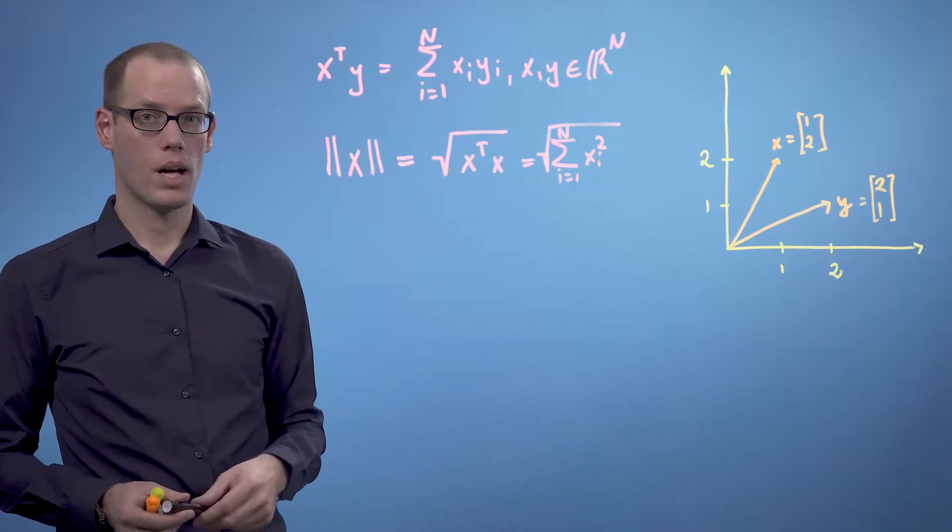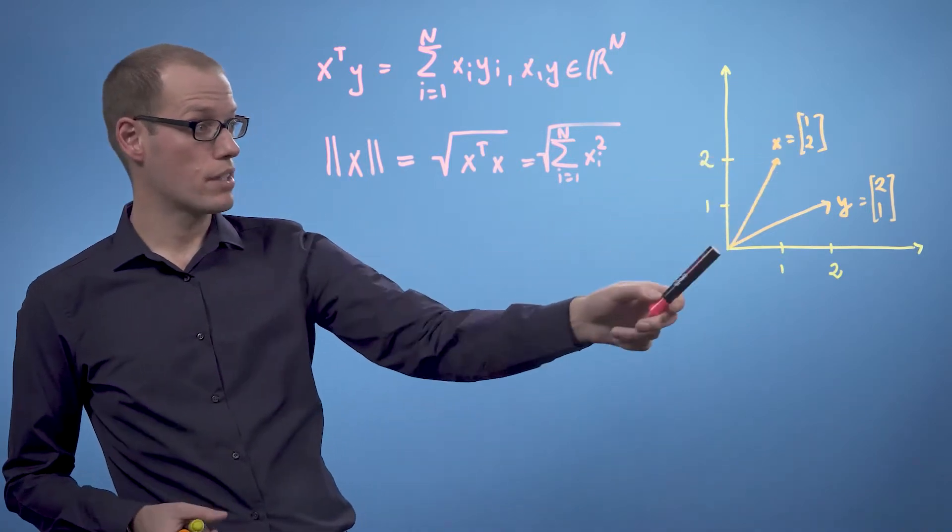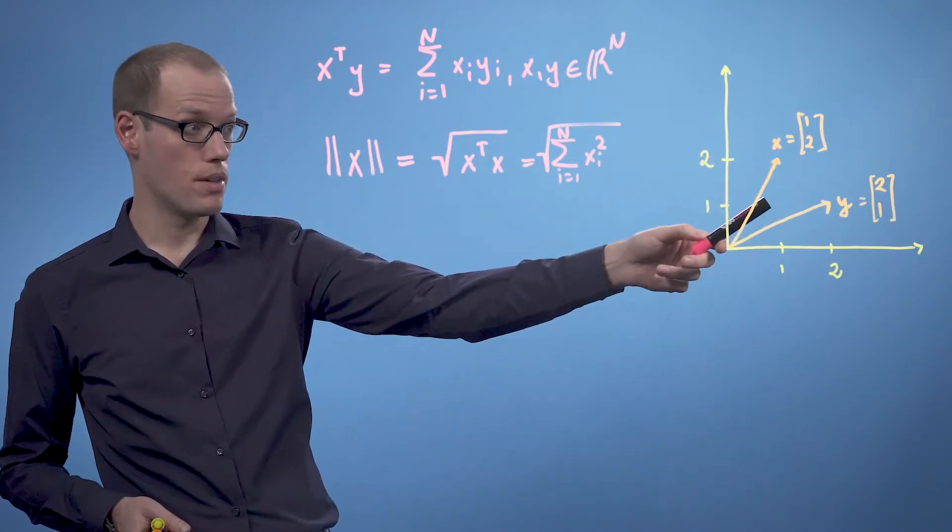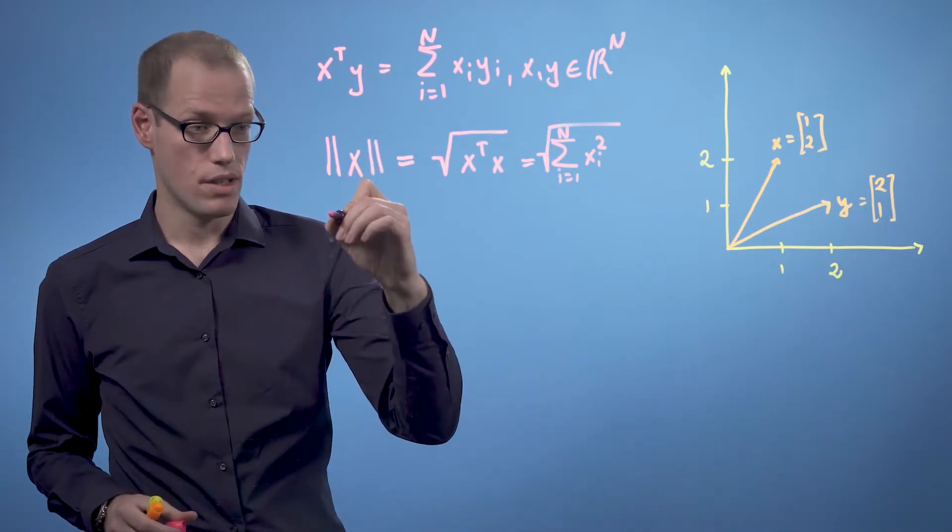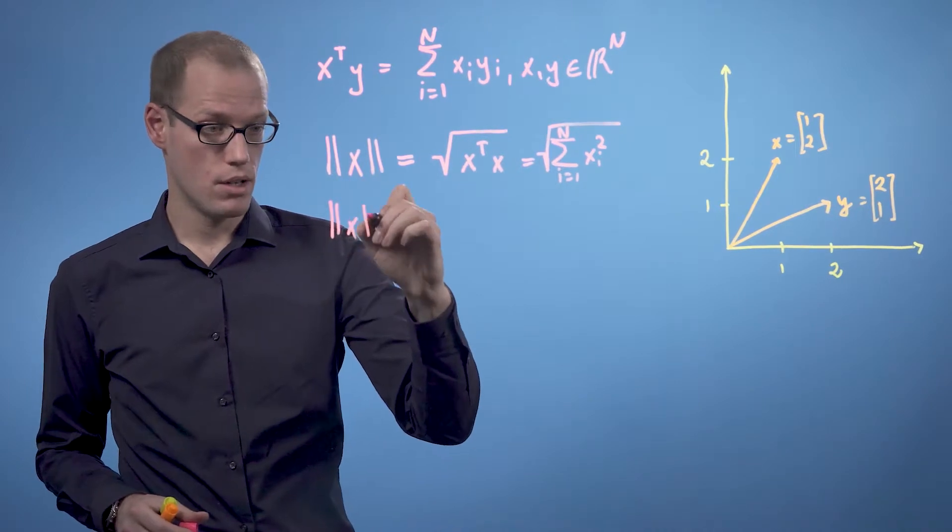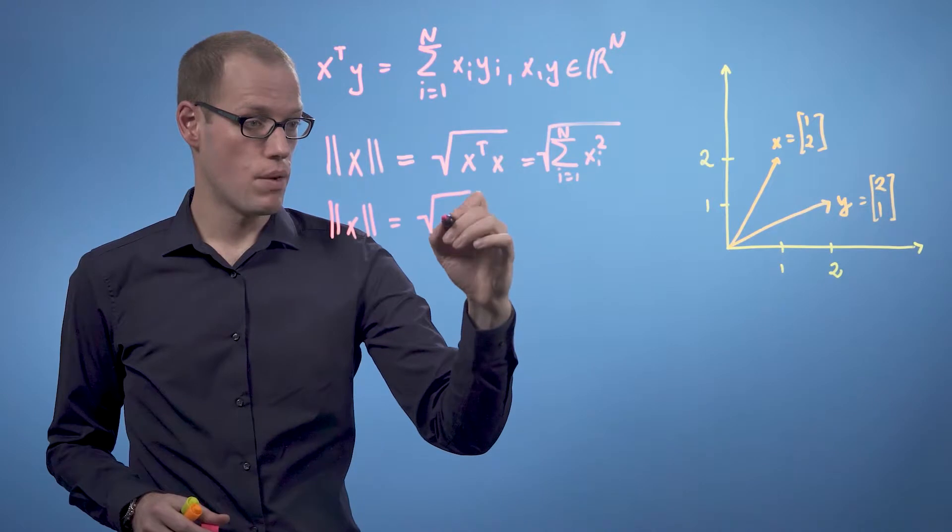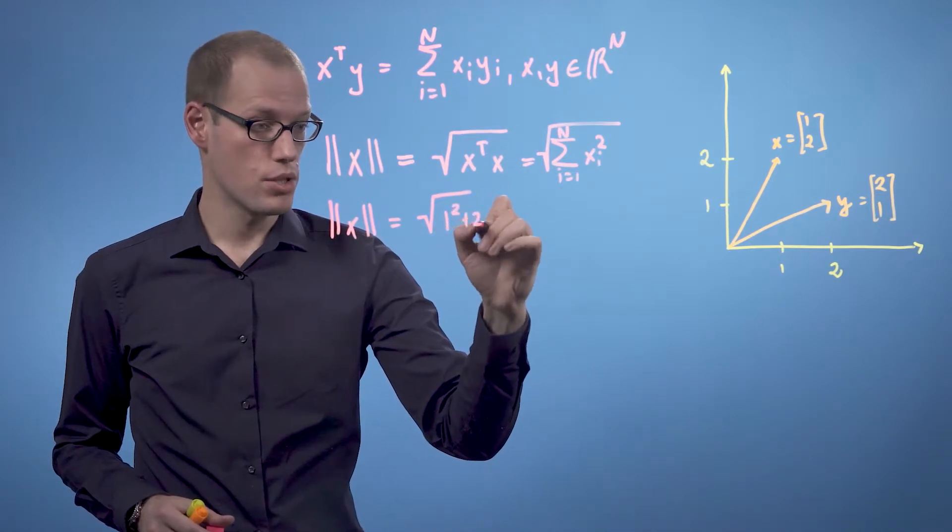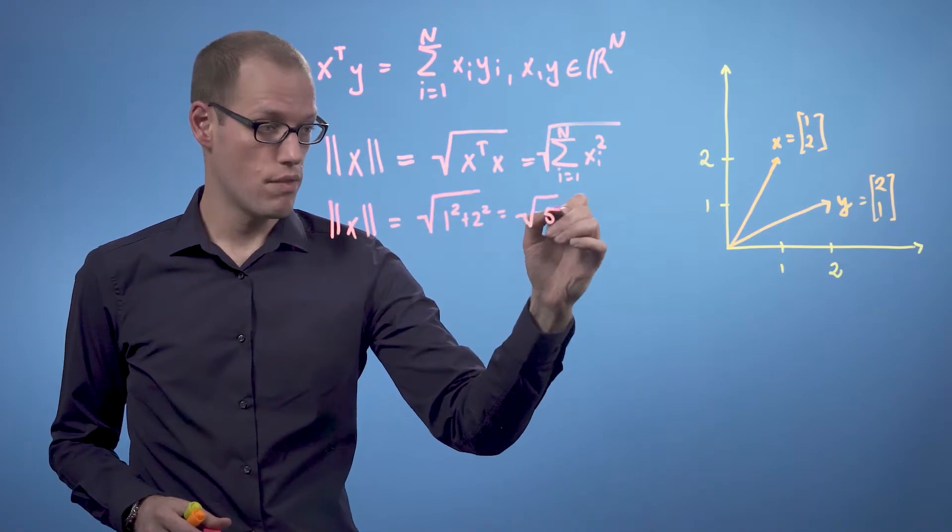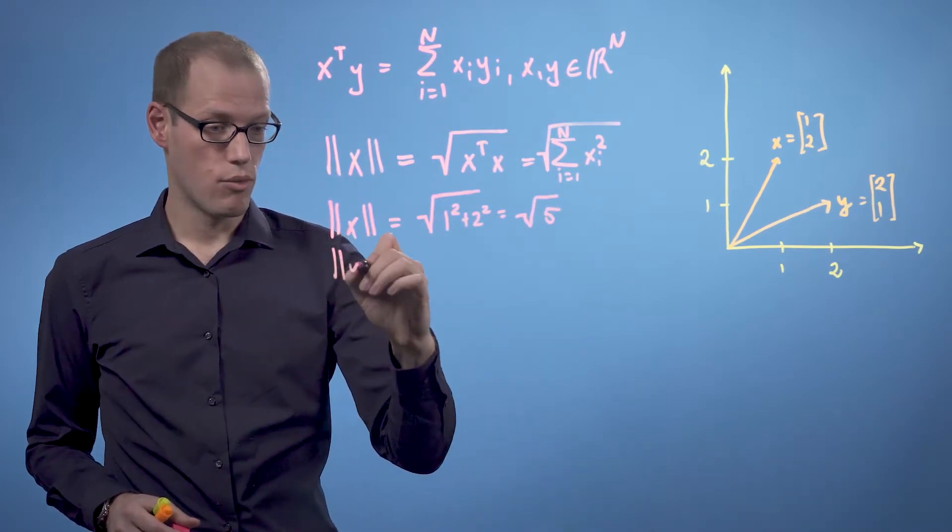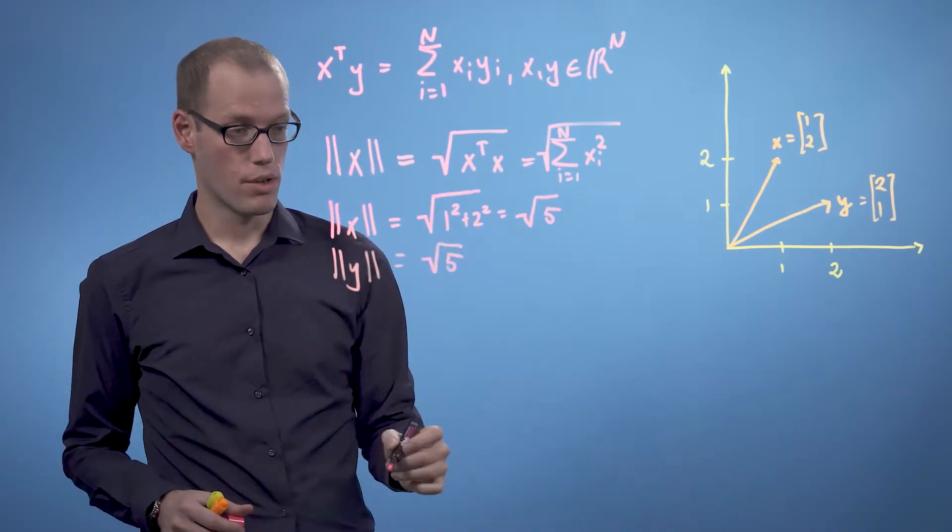Let's have a look at an example. We take a vector x as (1, 2) and a vector y as (2, 1) in a two-dimensional plane. Then we can compute the length of the vector x as the square root of 1 squared plus 2 squared, which is the square root of 5, and the length of y similarly is the square root of 5 as well.